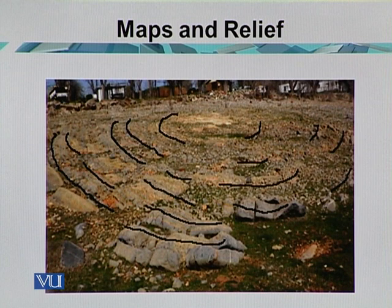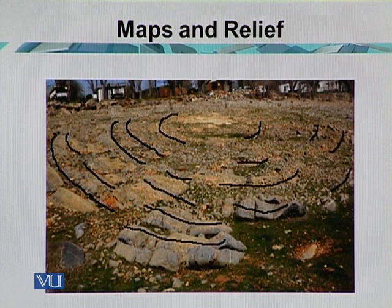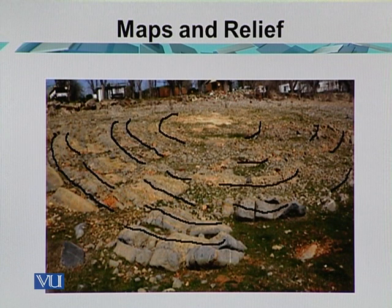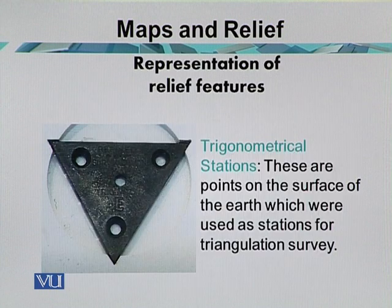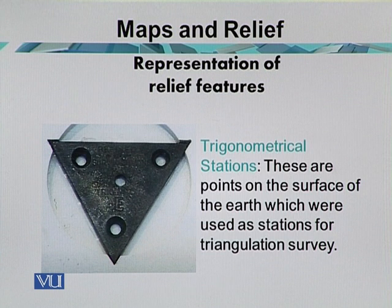Form lines are approximately contours — they are interpolated by eye sketching in between instrumentally fixed contours. They are shown by broken lines and are easily distinguished from contours. Form lines help specially to bring out the minor details of the topography which are not easily shown by contours in an area of low relief and with large contour intervals.